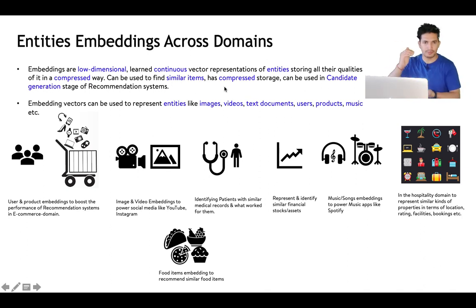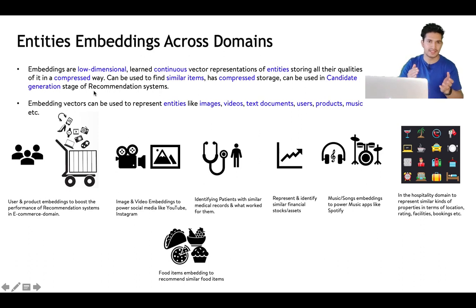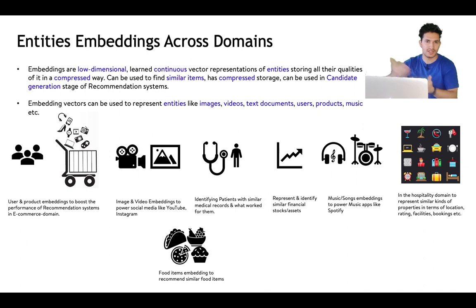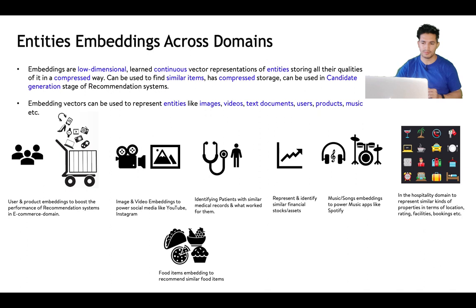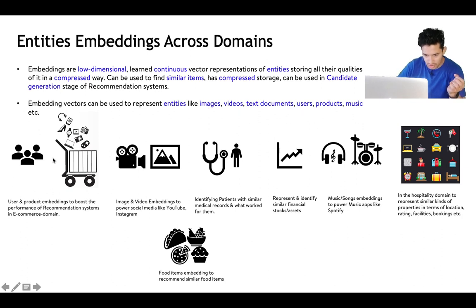Embeddings are used a lot in the candidate generation stage of recommendation systems. You can generate embedding vectors for images, videos, tags, documents, users, products, music, and more. For e-commerce, user embeddings are generated so that similar users are shown the same suggestions, and product embeddings allow substitutes to be recommended when something is unavailable.